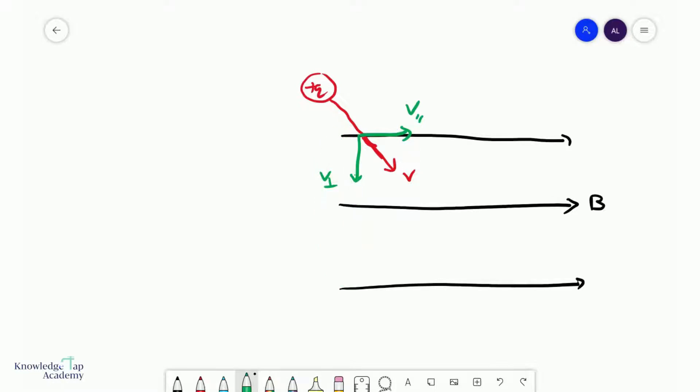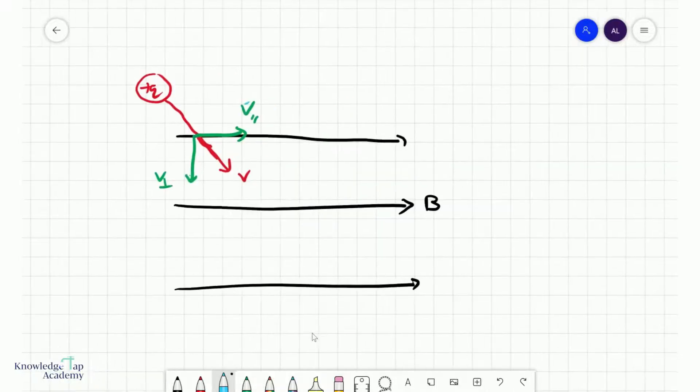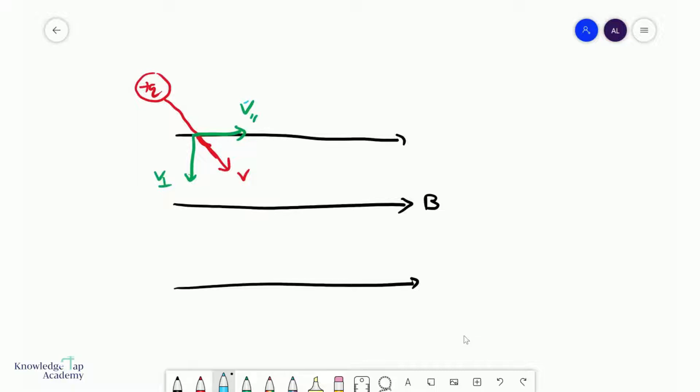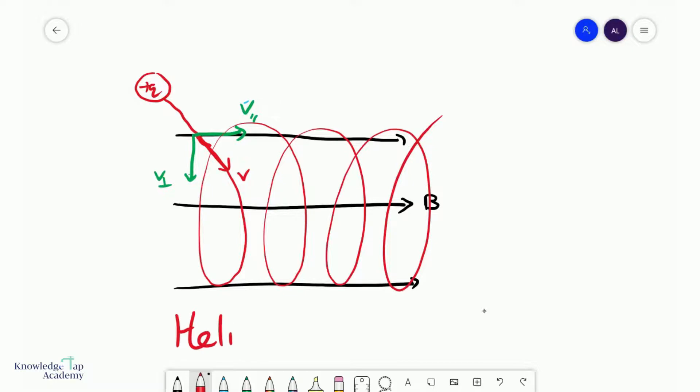However, there is this additional V parallel over here. Now we know that the parallel component of the velocity, because it's parallel to the magnetic field, doesn't change. It doesn't experience any force in this direction, and so this is a constant velocity. So you have one circular motion going out and in of this plane, and then you've got a constant velocity to the right, and so when you combine those two, you are going to get something called a helical motion. So it's a circular motion with some forward velocity. Helical motion.